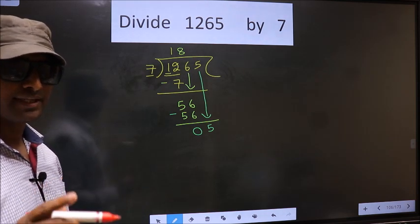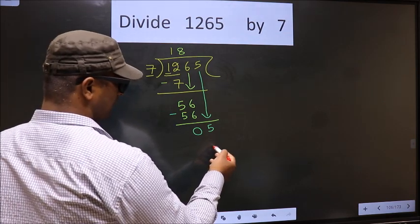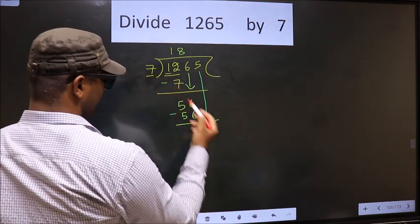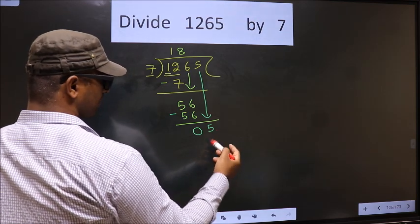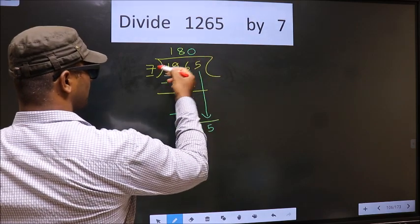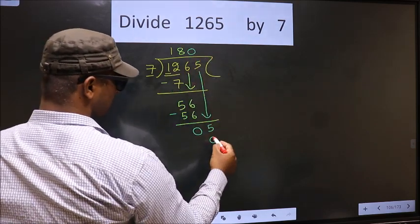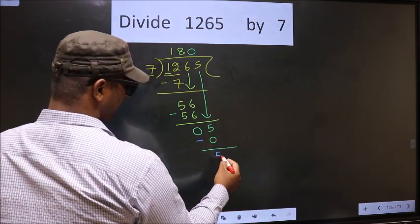Instead, what you should think of is what number should we write here. If we write 7 here, that is larger than 5. So what we do is we take 0 here. So 7 into 0 is 0. Now you subtract. 5 minus 0 is 5.